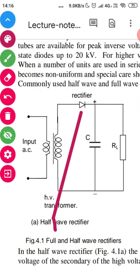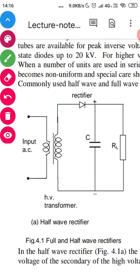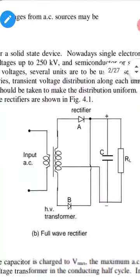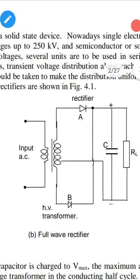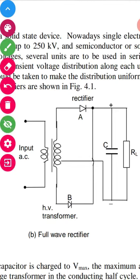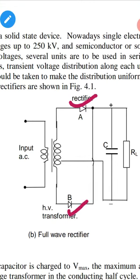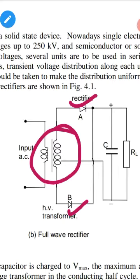In a full-wave rectifier circuit, two rectifier diodes — A and B — are used, connected at the midpoint. This midpoint-connected transformer is called a center-tap transformer. The center-tap transformer provides the full voltage from two separate halves of the winding.